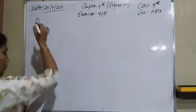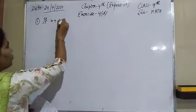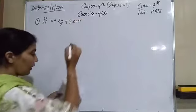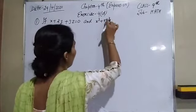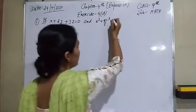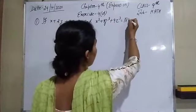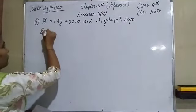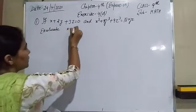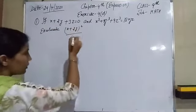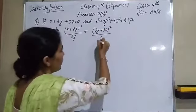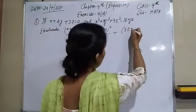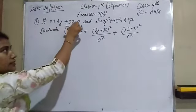The first question of this worksheet is: if x + 2y + 3z = 0, and x³ + 4y³ + 9z³ = 18xyz, then you have to evaluate the value of (x + 2y)² / (xy) + (2y + 3z)² / (yz) + (3z + x)² / (zx). Now, we have given x + 2y + 3z = 0 and we have to find the value of this expression.